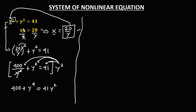Equate this equation to zero. Transpose the positive 41y squared to the left side and arrange by highest exponent: y to the power 4, minus 41y squared, plus 400, equals 0.